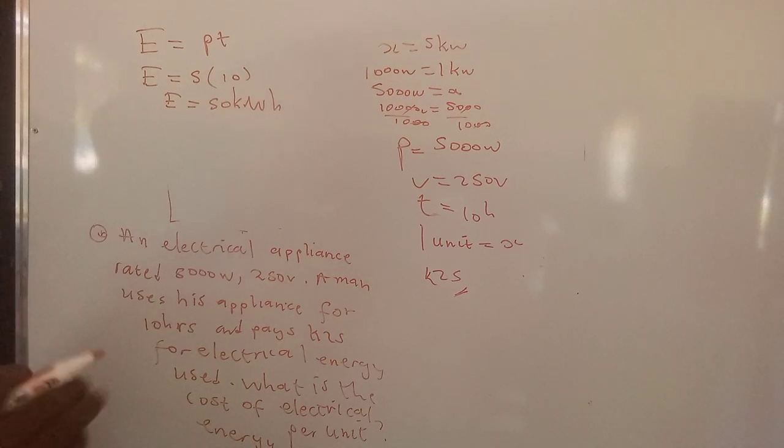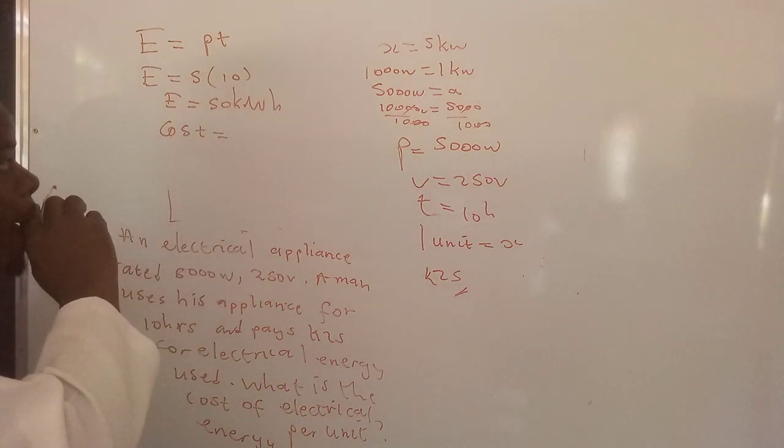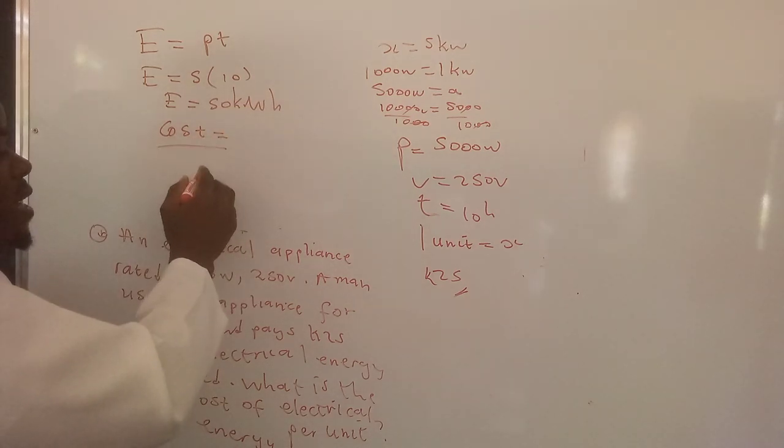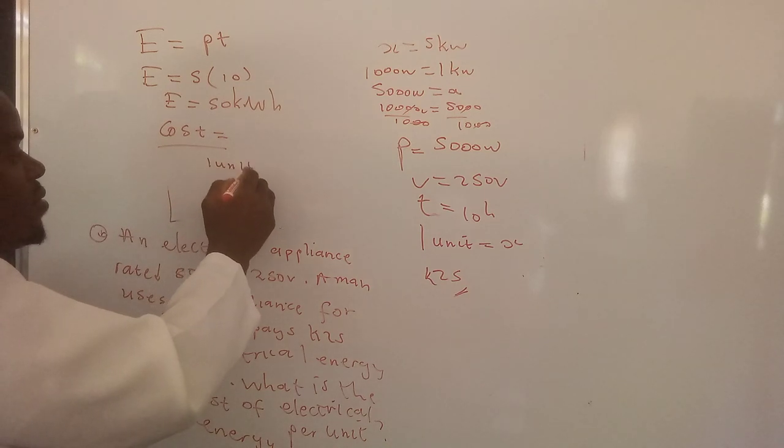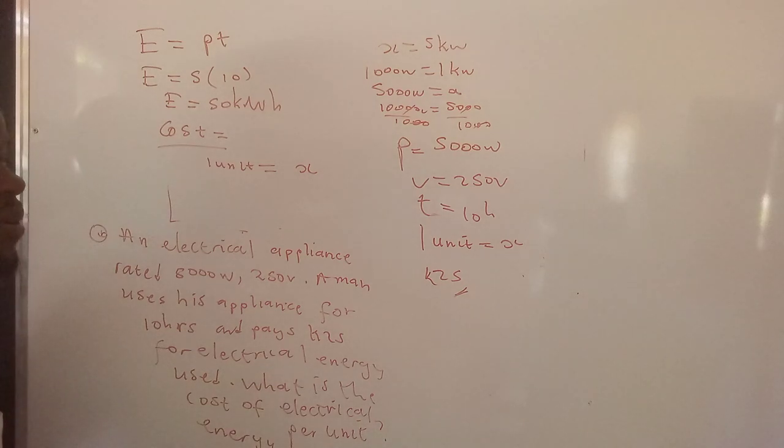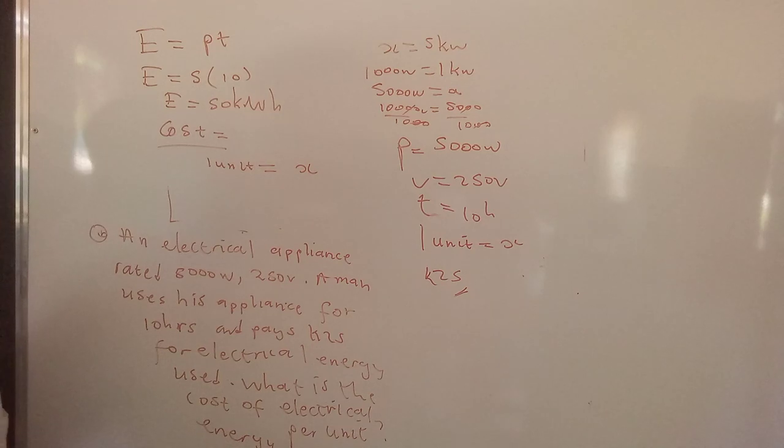Now how to determine the cost of the energy that has been used? We say the cost of energy is equal to the energy. Let me simplify this. We say one unit is equal to we don't know. We don't know the value of each unit of energy.